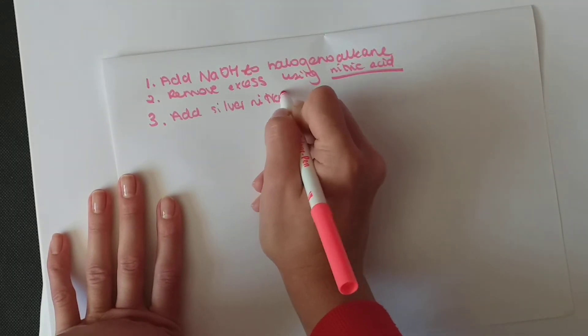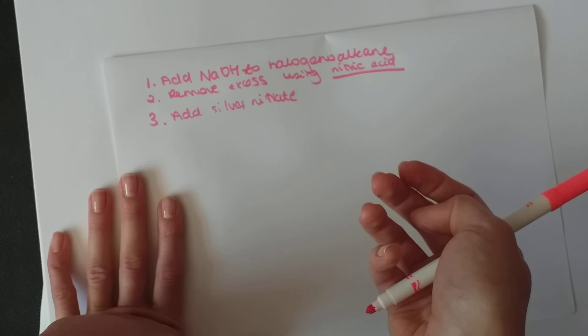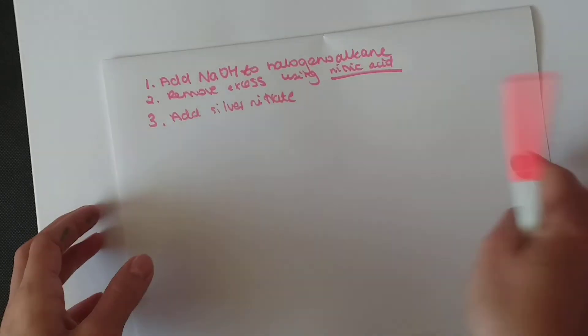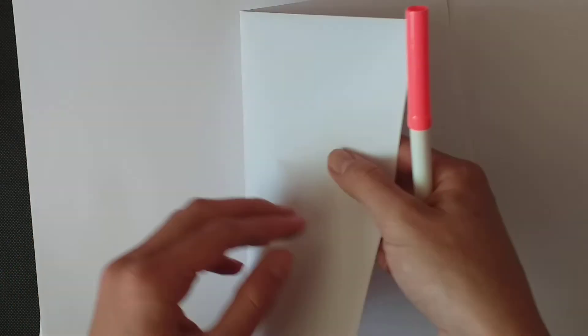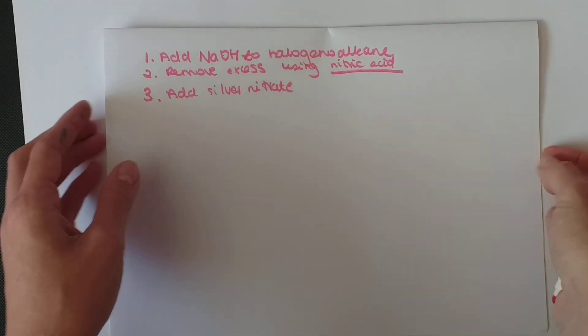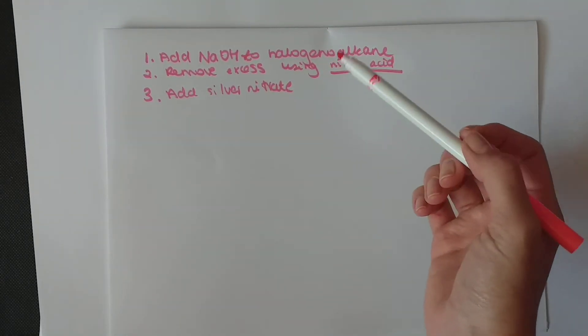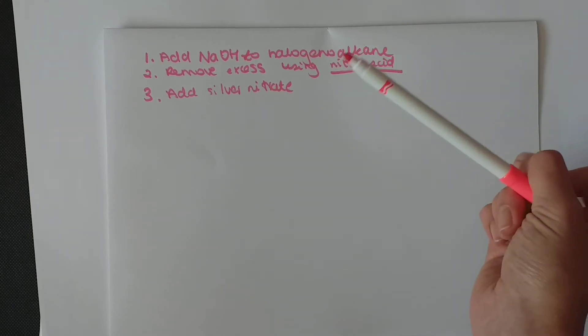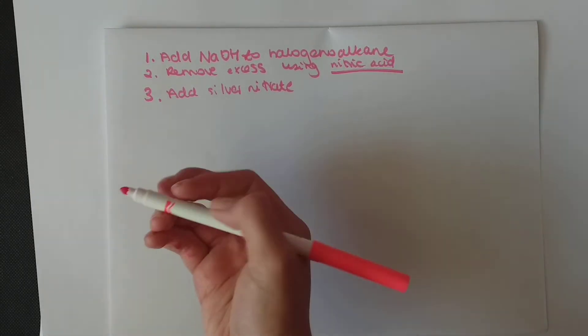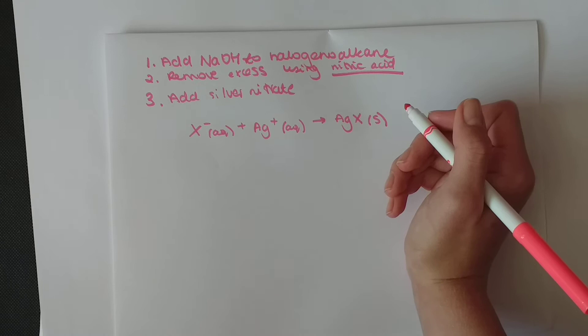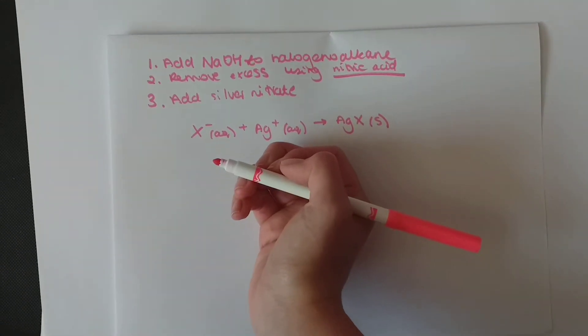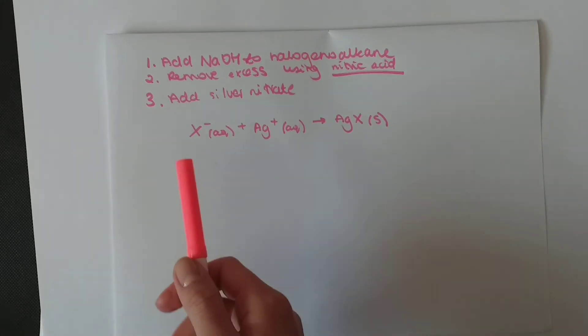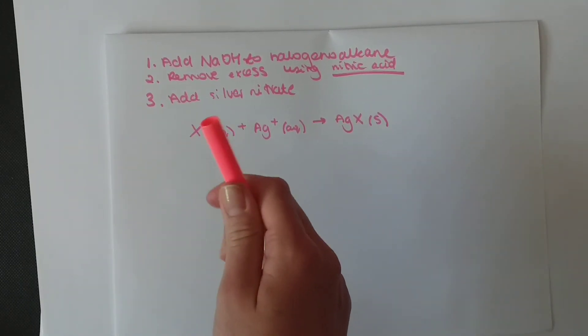And the third step is to add the silver nitrate. When you add the silver nitrate and it will find a chlorine, they will bond together to form a precipitate. And here is the reaction. In this reaction, I included X and not chlorine because this could be either chlorine, bromine or iodine.